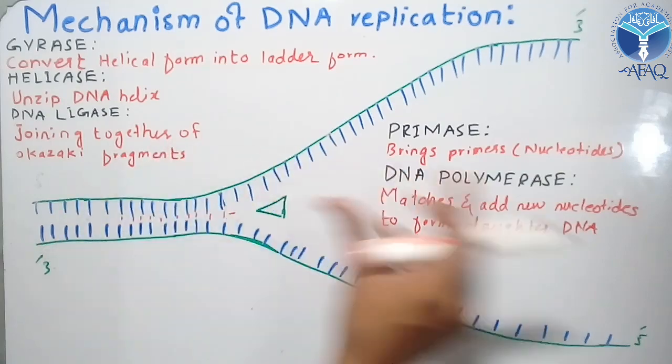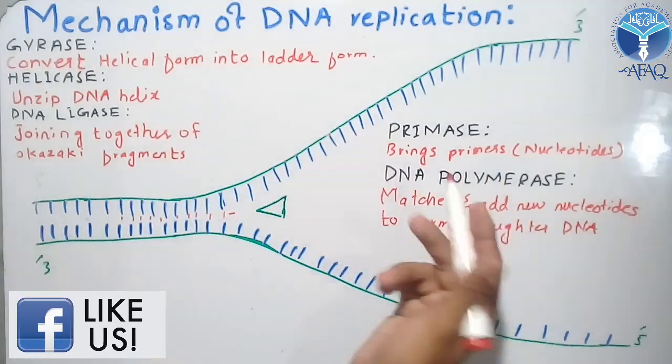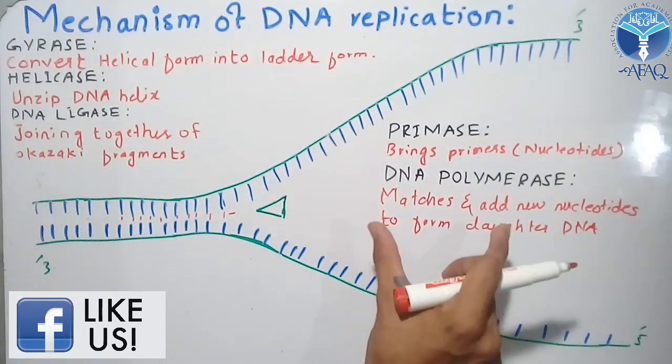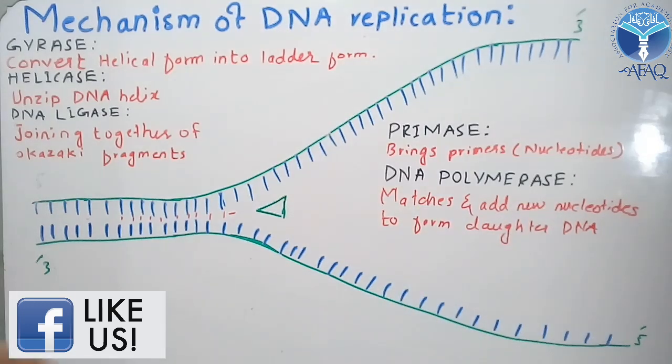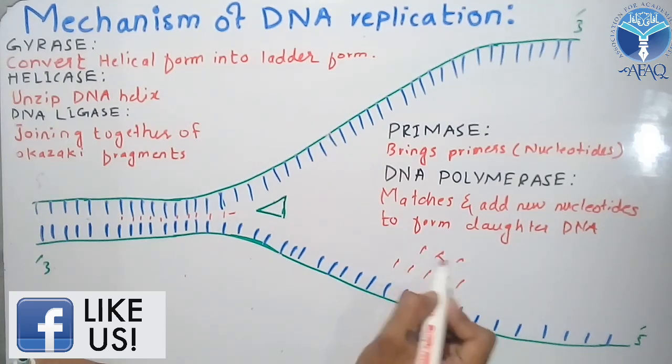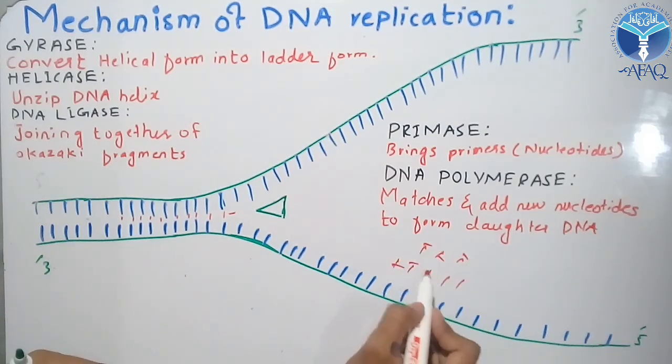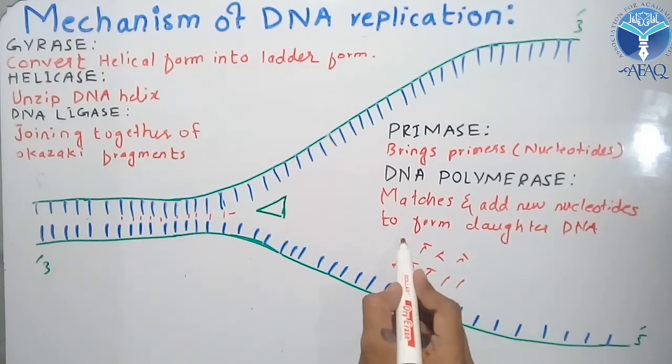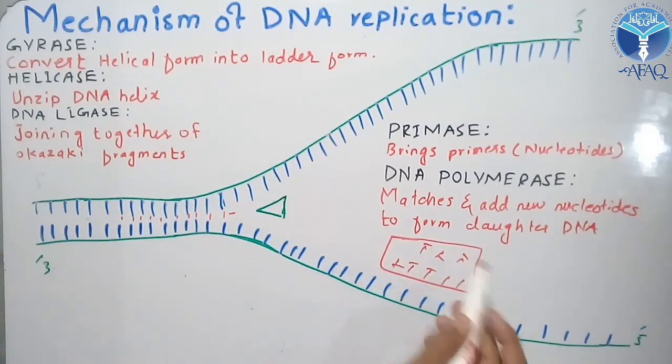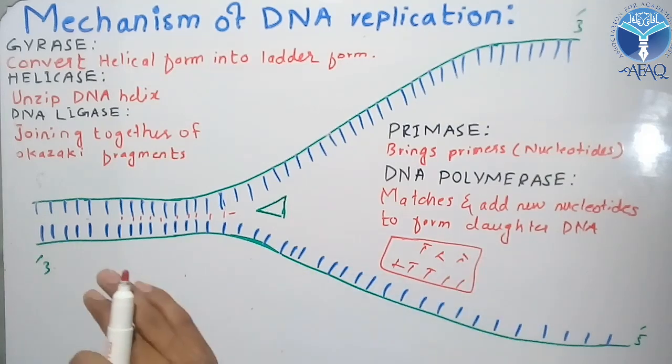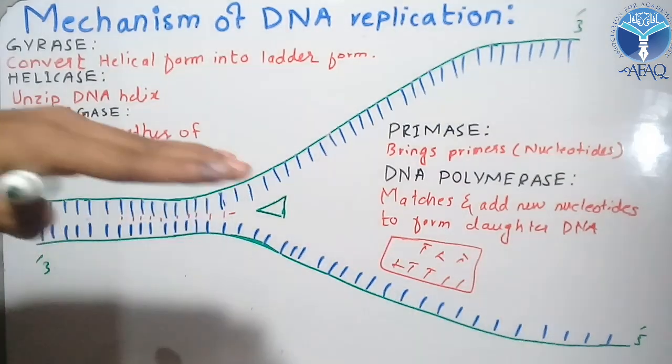DNA polymerase is very important. If you have primase, the nucleotides will be used. The nucleotides will attach in a sequence and form the new strand. This is done by DNA polymerase.